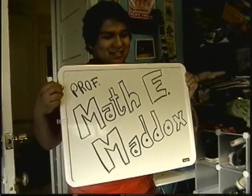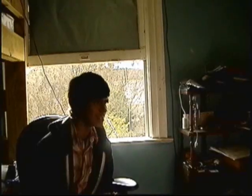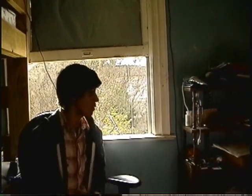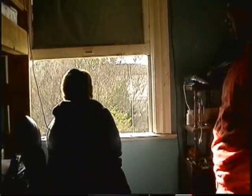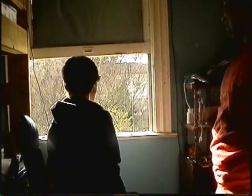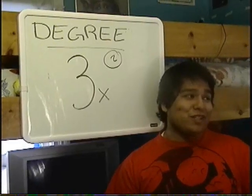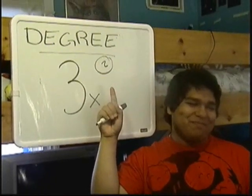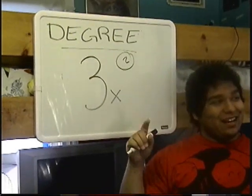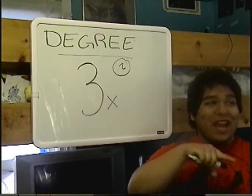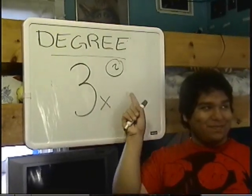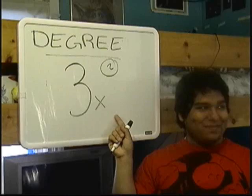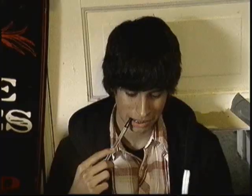The professor explains it's a pun on 'Mathematics.' He then introduces the concept of degree: the degree is the exponent of the variable. When asked if a degree can be negative, he confirms: yes, they can.